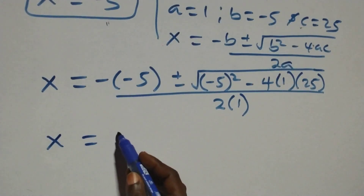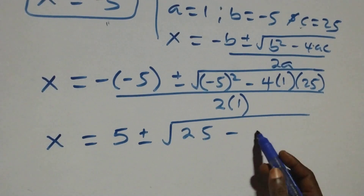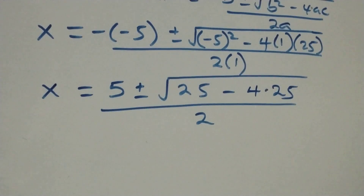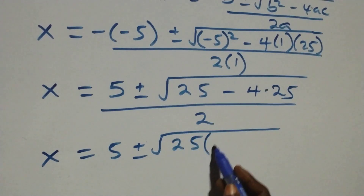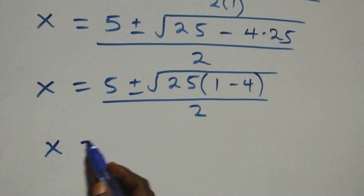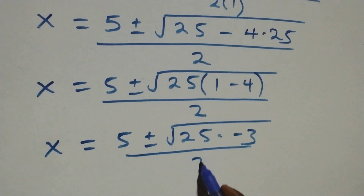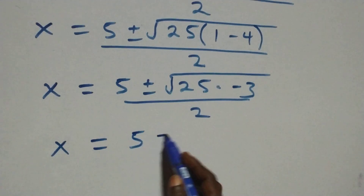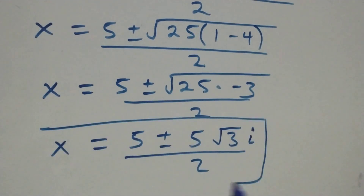This becomes x equals to 5 plus or minus square root of 25 minus 4 times 25. Factoring out 25 common, we get 25 times 1 minus 4, which is minus 3, over 2. Taking the square root of 25, that's 5, we get x equals to 5 plus or minus 5 times root of minus 3, which is the same as 5 times root 3 times i, all over 2. These are two complex solutions.